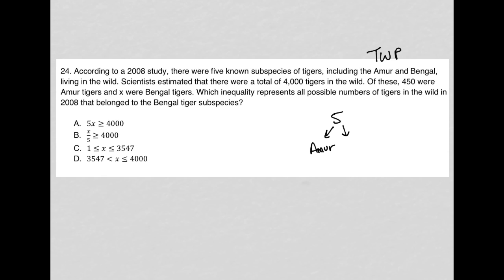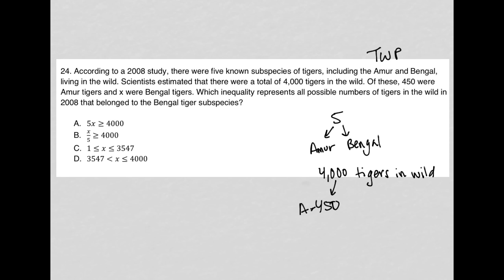One of them is Amur, one of them is Bengal, and of course there are another three that are not named. Scientists estimated that there were a total of 4,000 tigers in the wild. Of these, 450 were Amur tigers. So I'll say A equals 450, because Amur tigers were 450. And X were Bengal, so X equals B for Bengal.